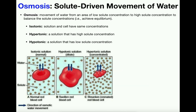Before we get into this, I want to talk about three kinds of solutions we can have. We can have what's called an isotonic solution, a hypertonic solution, or a hypotonic solution. When we talk about the solution, we're talking about the solution outside the cell. Unless stated otherwise, you're always to assume that isotonic, hypertonic, or whatever it happens to be is talking about the solution outside the cell. Here in all three pictures we're talking about a red blood cell, so the solution is what's outside of it — the extracellular part.